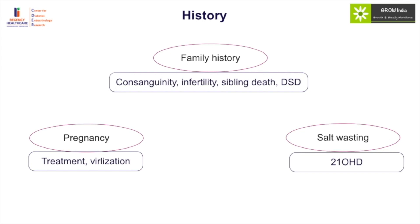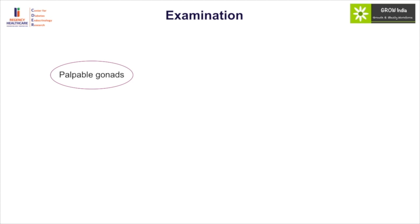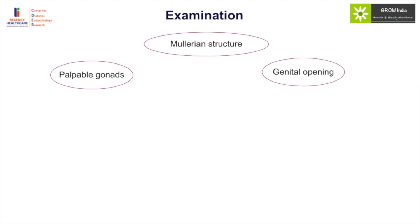On examination, the most important aspect is the presence of palpable gonads. Most palpable gonads, particularly if round and smooth, are testes. Rarely, a globular or glandular structure could indicate presence of an ovotestis, and sometimes a prolapsed fallopian tube can cause confusion. Mullerian structures can be identified using a per-rectal examination or abdominal ultrasound, and because of the maternal estrogen effect, ultrasounds are quite reliable for identifying mullerian structures in the first three to six months of life.